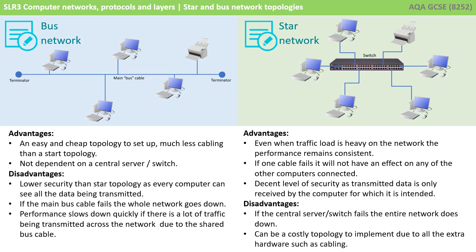Let's pull together everything we've talked about and look at the two topologies for the exam. With a bus network, it is easy and cheap to set up with much less cabling needed than a star network, and we're not dependent on a central server or switch. The disadvantage is there's low security as every computer can see all the data on the central bus cable. If the main bus cable fails, the whole network goes down, and performance can slow down quickly with heavy traffic due to the single shared central cable.